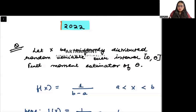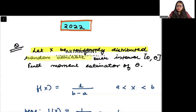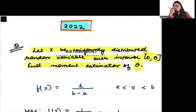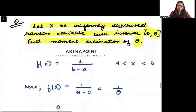This is a 2022 question. It says: let X be a uniformly distributed random variable over the interval 0 to theta. Find the moment estimator of theta. So X is uniformly distributed between 0 to theta and you have to find the moment estimator of theta.